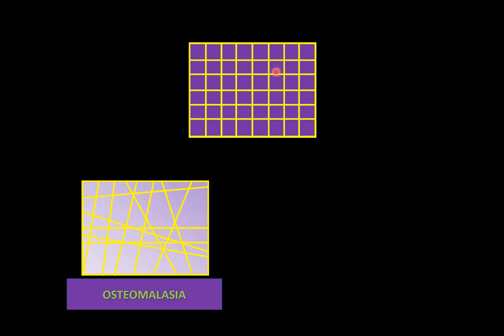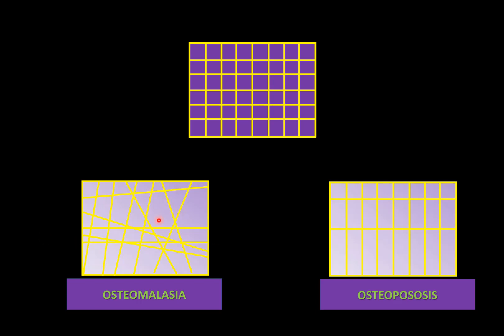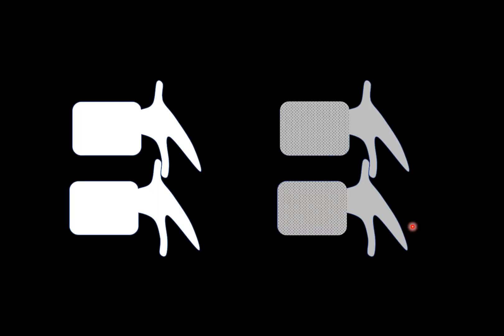Each bone is made up of collagen deposited in both vertical and horizontal patterns, with calcification inside. Osteomalacia and osteoporosis are both diseases with low calcium, but they differ: in osteomalacia the amount of collagen remains the same but is disorganizedly arranged, whereas in osteoporosis the quantity of collagen is reduced — mainly the horizontal trabeculations in vertebral bodies — due to the enzyme collagenase.